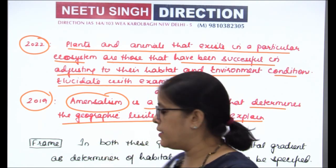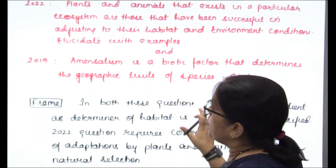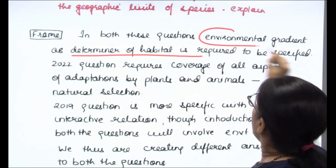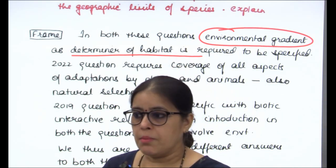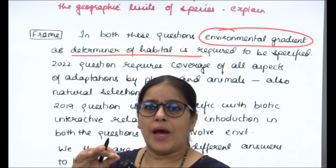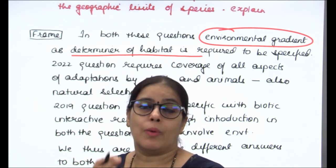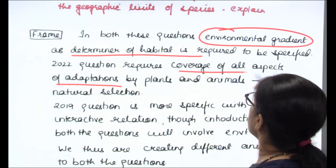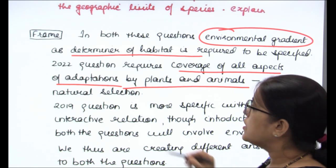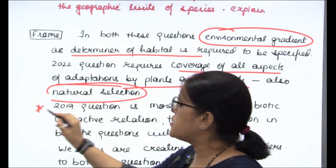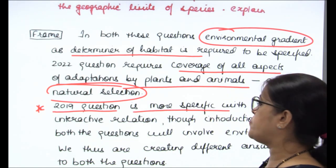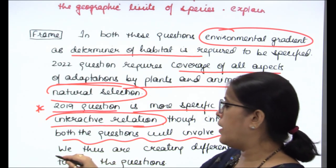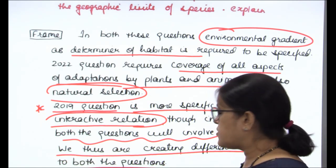What has been the common thread for both questions? In both questions, we need to talk about the determiners of habitat and environmental gradient. Amensalism is a biotic factor, but is the biotic factor not regulated by environmental gradient? So in both questions, you need to talk about environmental gradient and then adaptation. Coverage of all aspects of adaptation by plants and animals with natural selection has to be taken up. The 2019 question is more specific, talking about the biotic interactive relation, though both questions involve environment — thus we are creating different answers for each.